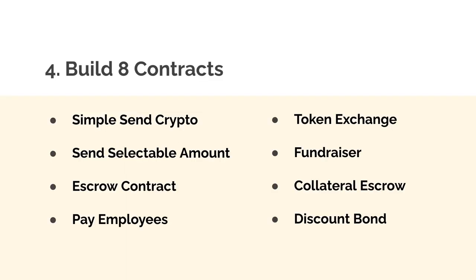Finally, we'll build eight contracts including a simple send crypto contract, a send selectable amount of crypto contract, an escrow contract, a pay employees contract, a token exchange contract, a fundraiser contract, an escrow contract with collateral, and a discount bond contract.